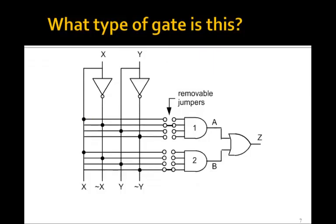What type of gate is this? What's A? A is NOT X. B is NOT Y. So Z is NOT X OR NOT Y. Apply De Morgan's theorem again, NOT (X AND Y). What kind of gate? A NAND gate.